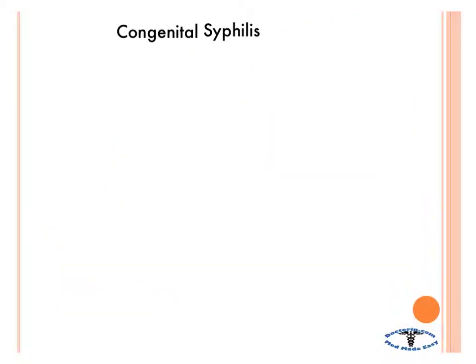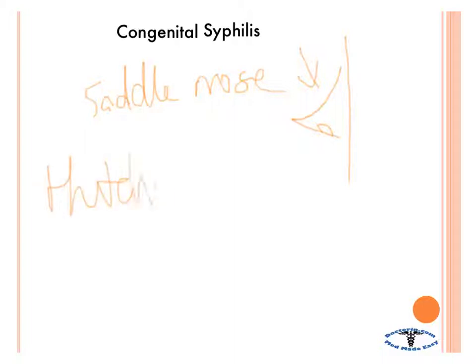Congenital syphilis is where a mother who has syphilis gives birth to a child. You have a couple of things that are very pathognomonic. The first thing you get is a saddle nose — it kind of looks like a saddle on the person's nose. The second thing you see is Hutchinson's triad.